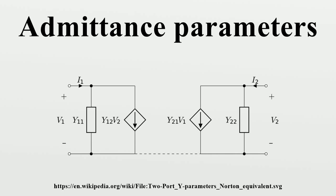Admittance parameters, or Y-parameters, are properties used in electrical engineering, electronic engineering, and communication systems engineering to describe the electrical behavior of linear electrical networks. They are also used to describe the small-signal response of non-linear networks. They are members of a family of similar parameters used in electronic engineering, other examples being S-parameters, Z-parameters, H-parameters, and T-parameters or A-B-C-D-parameters.